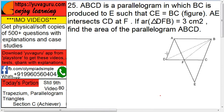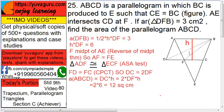ABCD is a parallelogram in which BC is produced to E such that CE equals BC. AE intersects CD at F. If the area of triangle DFB is 3 square centimeters, find the area of parallelogram ABCD. We construct height H.